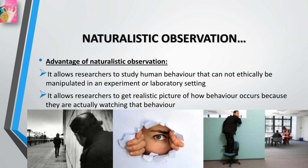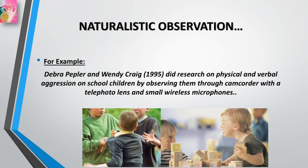One advantage of naturalistic observation is that it allows researchers to study human behavior that cannot ethically be manipulated in an experiment, and it provides a realistic picture of how behavior occurs. For example, it would not be ethical to deliberately create a situation where one child is aggressively bullied by another. However, it would be ethical to study bullying by observing aggressive behavior in children on a school playground.